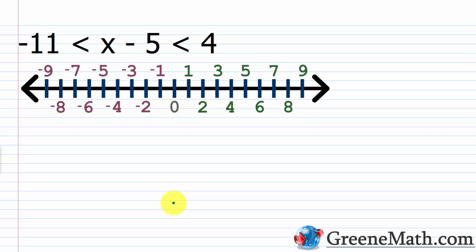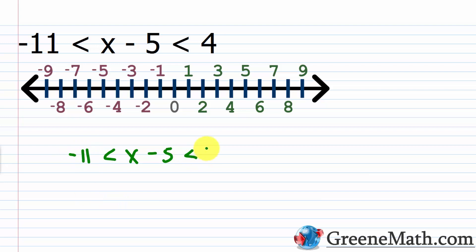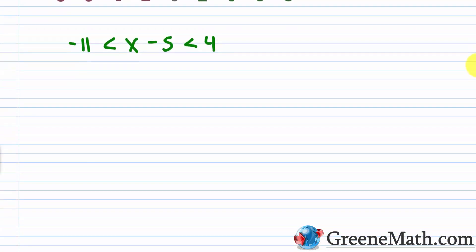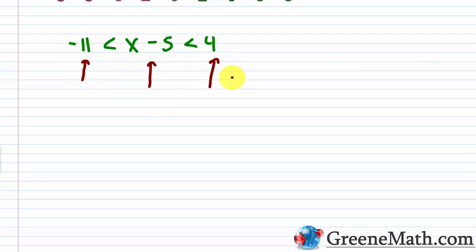If we have something like negative 11 is less than x minus 5 which is less than 4, how could we solve this for x? We have x minus 5 in the middle. We can say this is greater than negative 11, and we could say it's less than 4. We can split this up using the keyword 'and'. That's why we call it a three-part inequality.